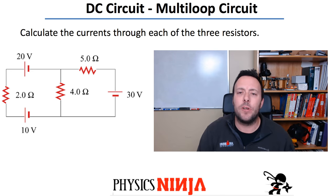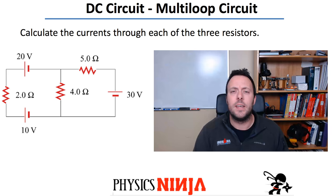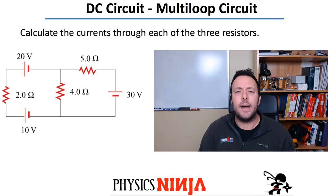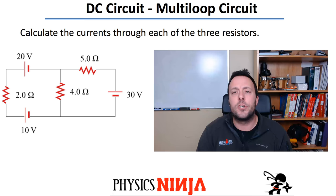Hi everybody. Today we're going to look at a multi-loop circuit. I've got a great circuit here for you — it's got three branches, three batteries, and three resistors. The goal today is to calculate what the current is through each branch. In order to do that, we're going to use Kirchhoff's rules: the loop rule and the junction rule, in order to set up equations and then solve for the currents.